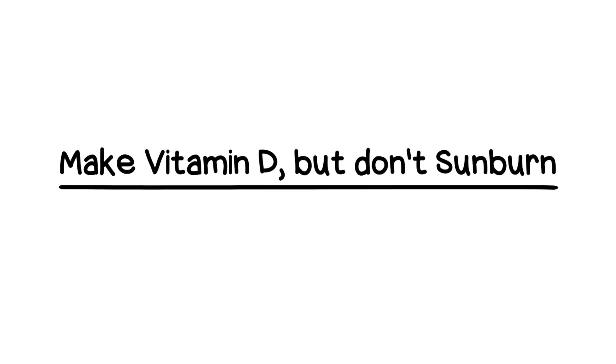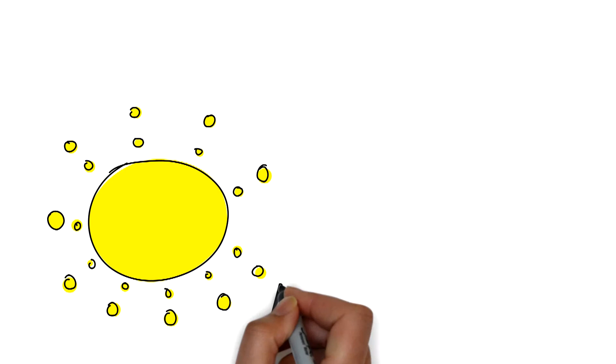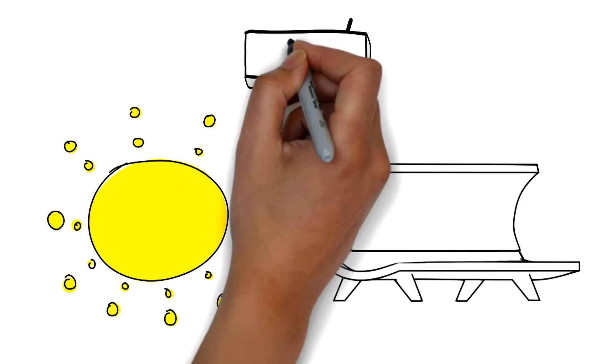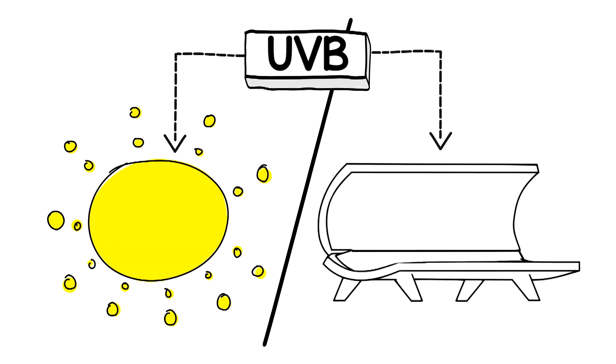Make vitamin D, but don't sunburn. The most natural way to make vitamin D is from sun exposure to your skin, specifically UVB light, which you can get from the sun or from most sun beds.